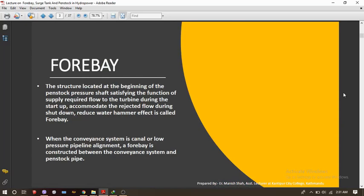The forebay is the structure located at the beginning of penstock pressure shaft, satisfying the function of supply required flow to the turbine during the startup, accommodate the rejected flow during shutdown, and reduced water hammer effect.